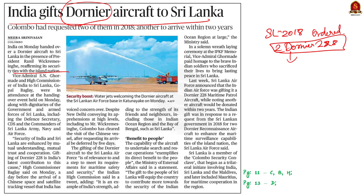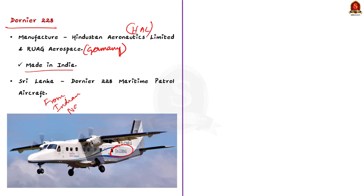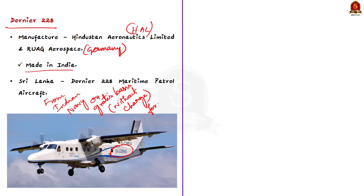Let us understand about the Dornier aircraft. The Dornier aircraft handed over was designed and developed jointly by Indian aircraft manufacturer Hindustan Aeronautics Limited (HAL) and RUAG Aerospace Germany, and is indigenously manufactured under the Make in India initiative. The handed-over aircraft was the Dornier 228 maritime patrol aircraft. India may provide one Dornier 228 from the Indian naval fleet on a gratis basis — meaning without charge — for two years, until the newly manufactured plane for Sri Lanka is ready. So Sri Lanka can use this aircraft free of cost until they procure the new one from India.